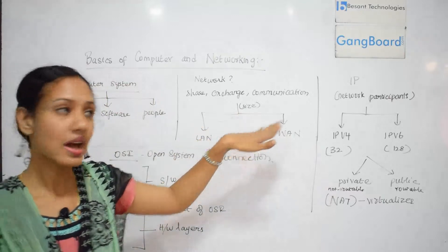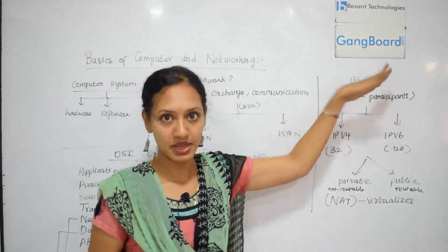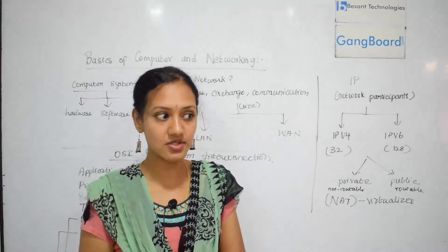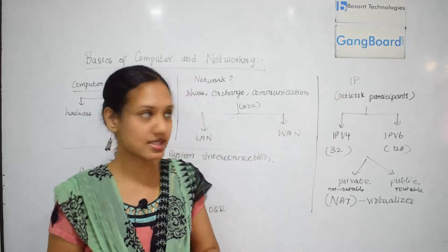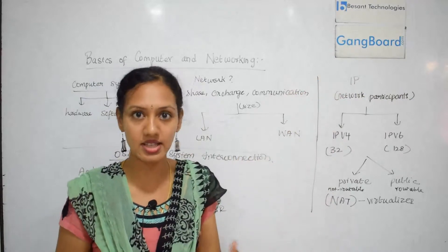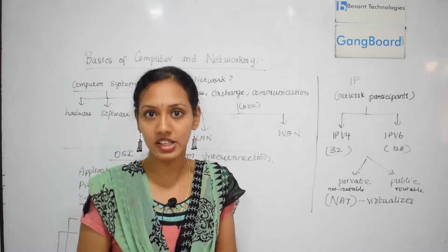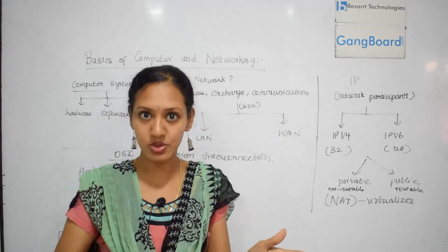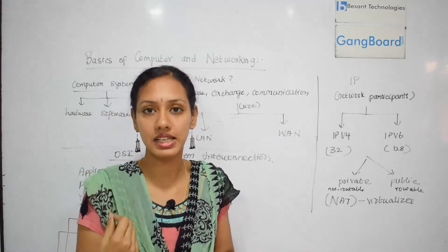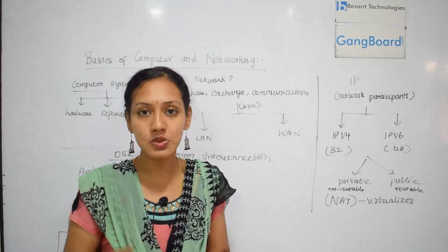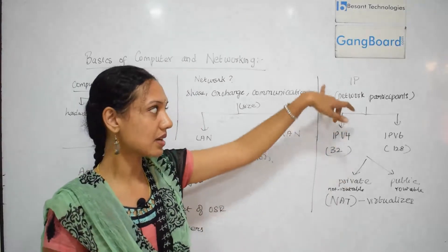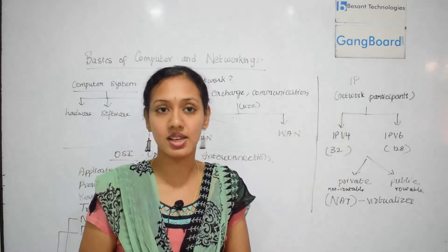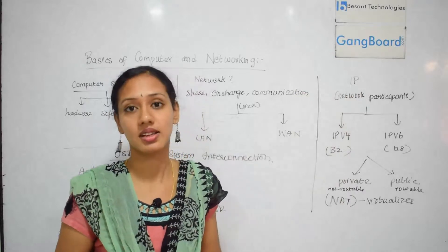IP is Internet Protocol. Just like how we have a physical address, a computer has an IP address — a numerical value assigned to each computer participating in a network. Each network participant is assigned a particular IP. The main thing about IP is that the IP address keeps on changing.